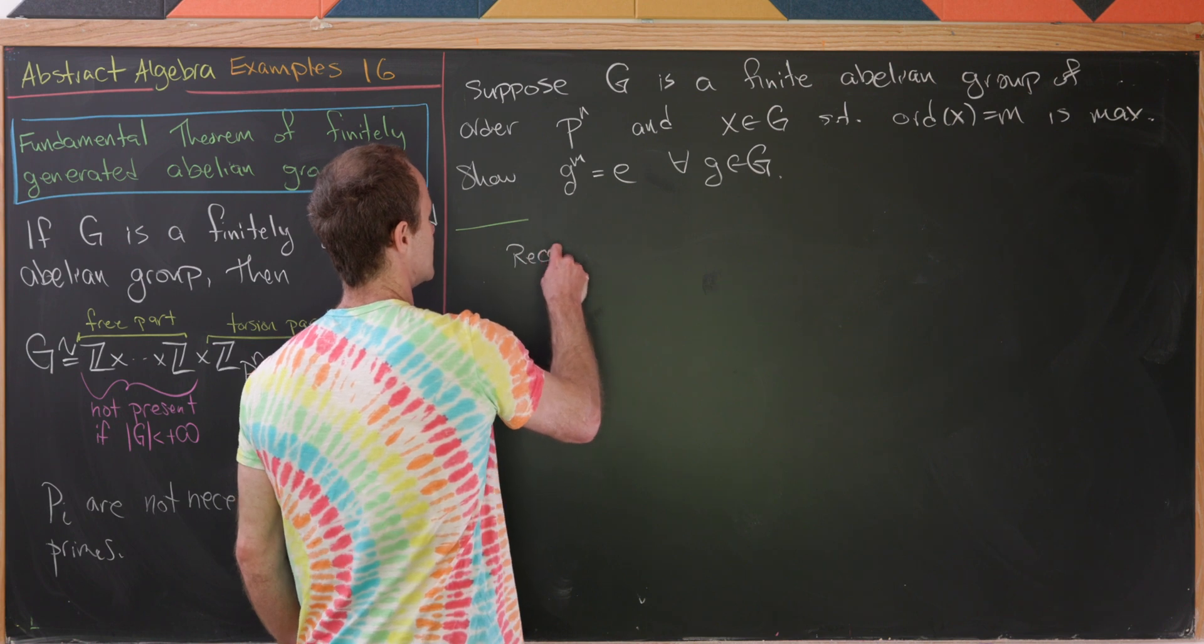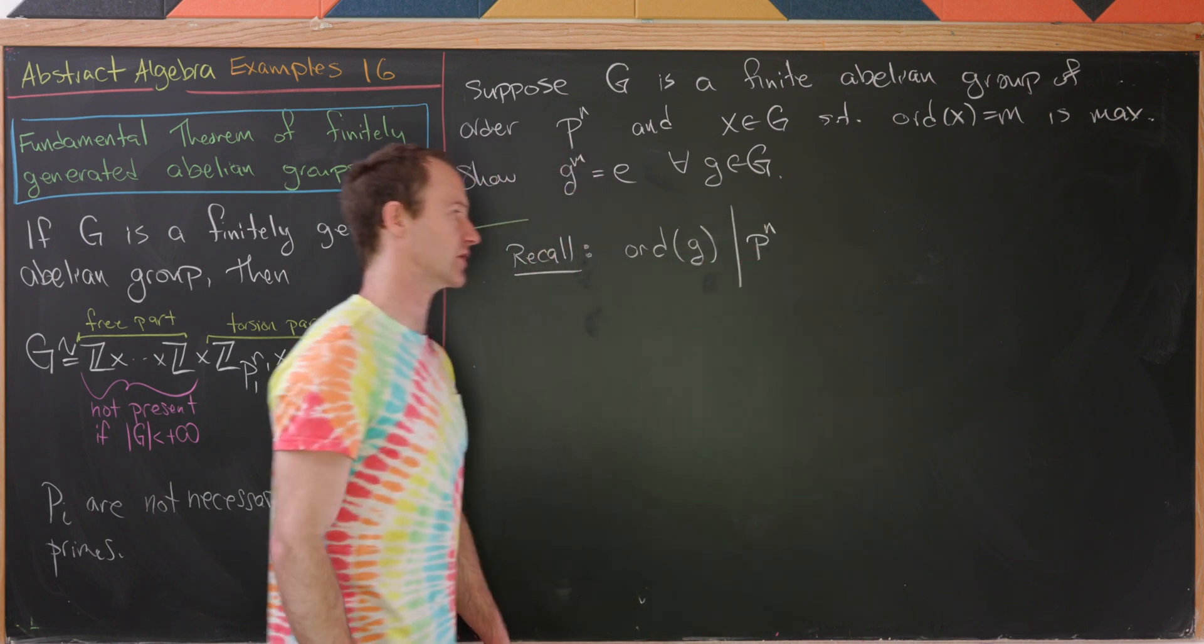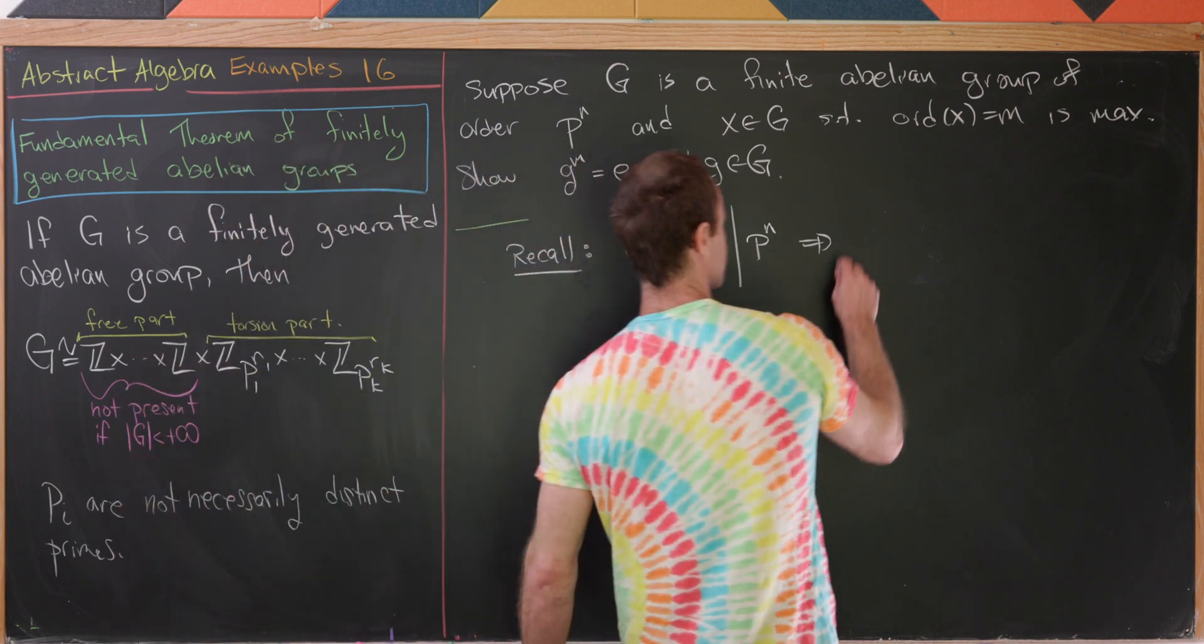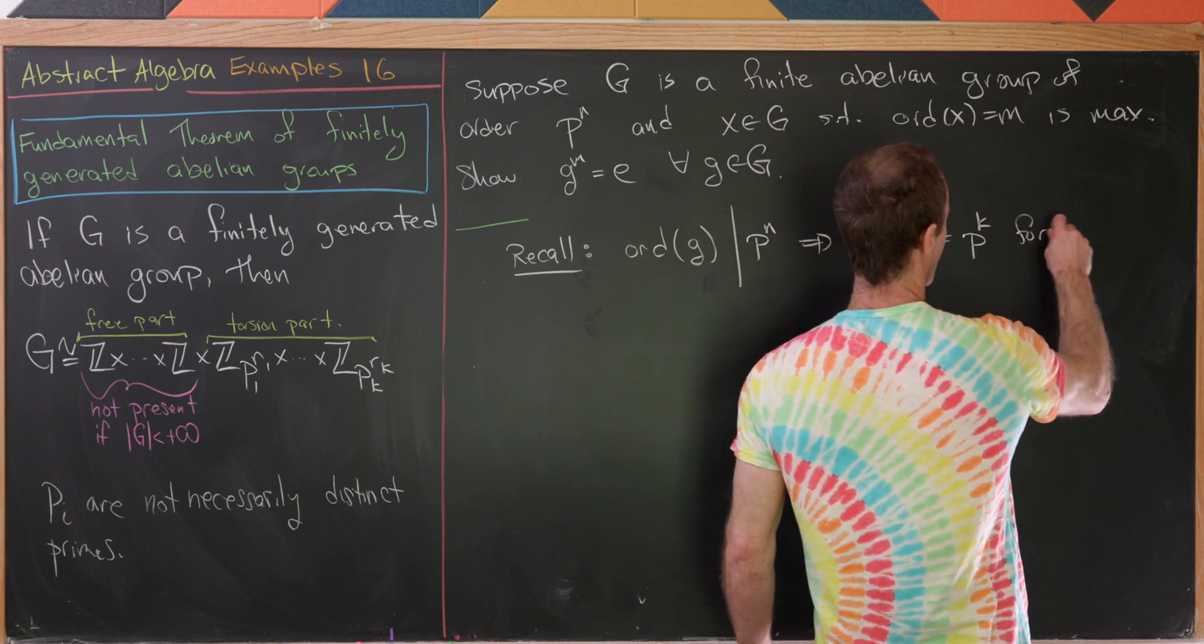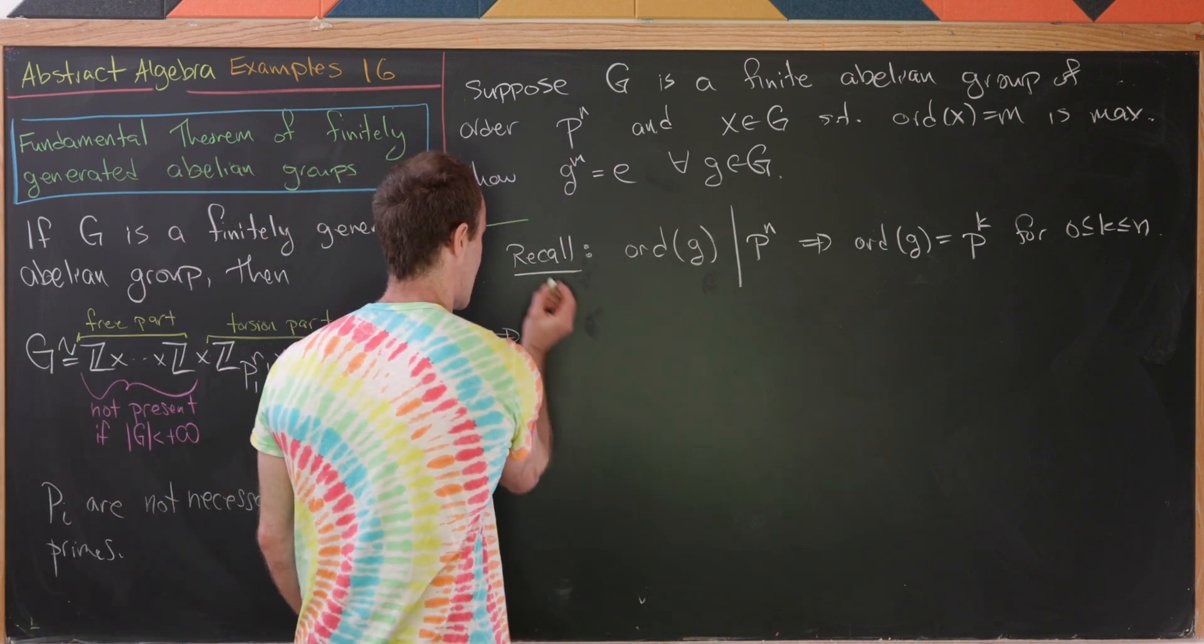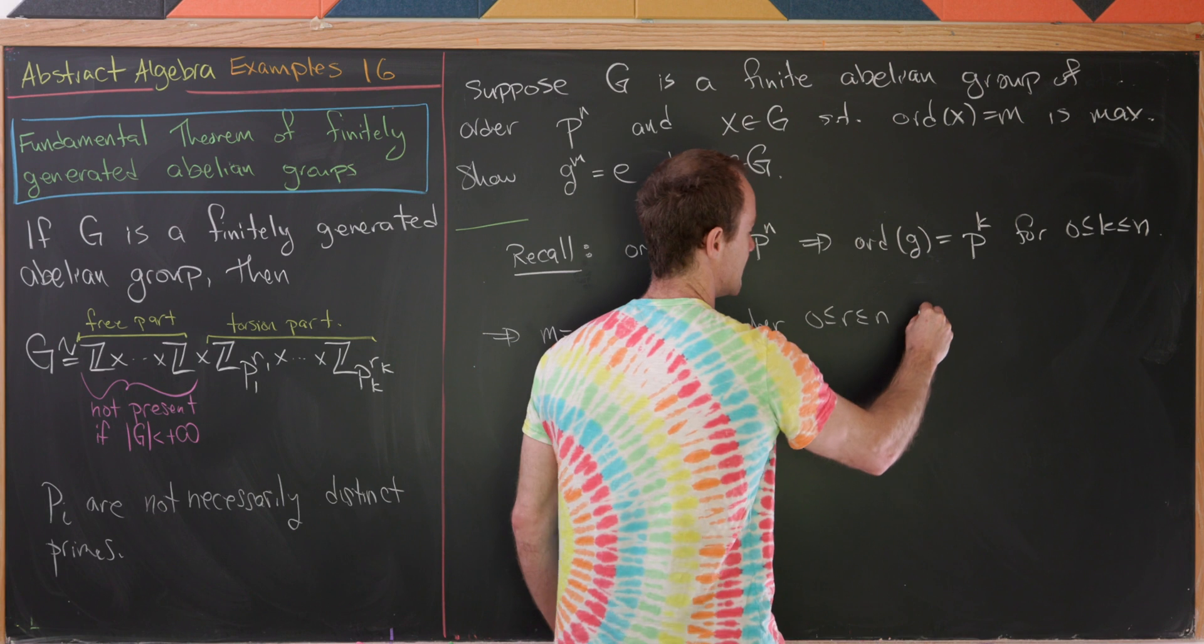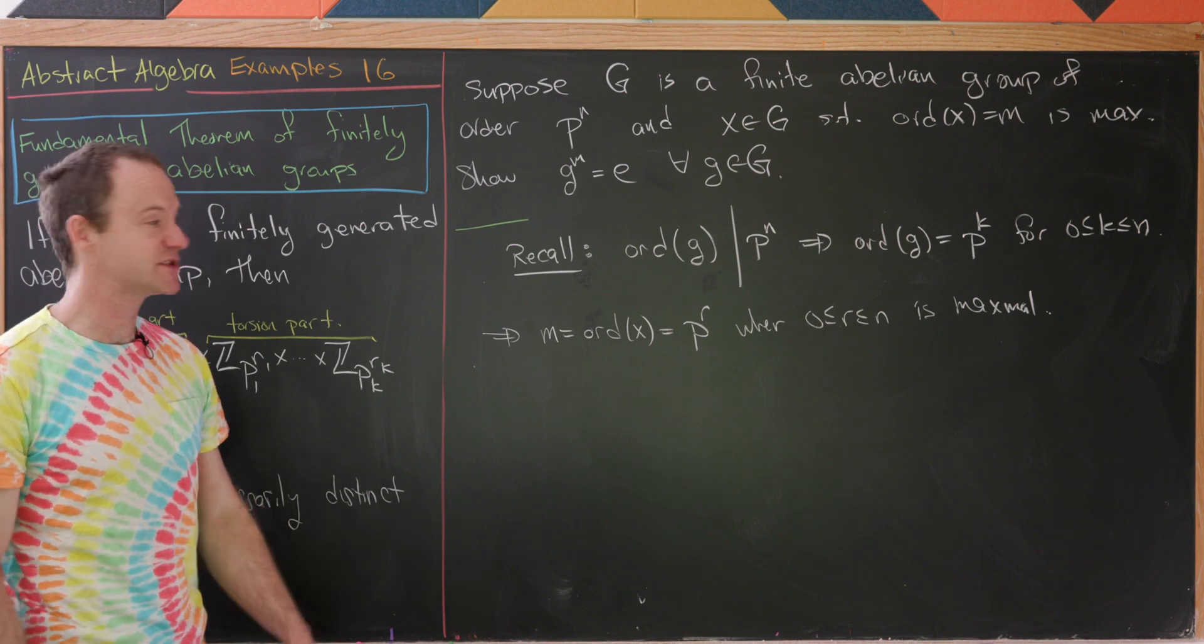So let's see how to do this. Let's recall from Lagrange's theorem, we know that the order of G must divide the order of the group. So again, that's from Lagrange's theorem. But what kind of things divide prime powers? Well, it's smaller prime powers. So that means that the order of G is in fact equal to P to the K for K between 0 and N. And then notice that includes the order of X. So we know M is equal to the order of X. But that's going to be equal to P to the R where this R is between 0 and N is maximal. So that's the important thing here that that order is maximal. And so now let's get to it.